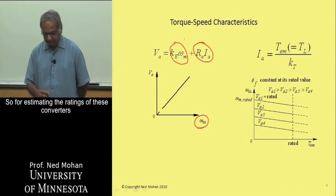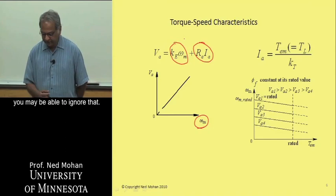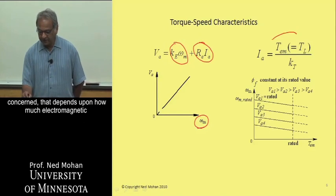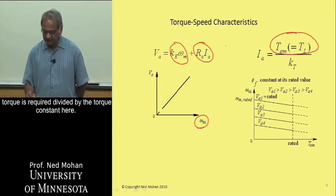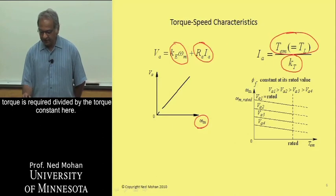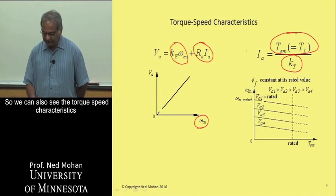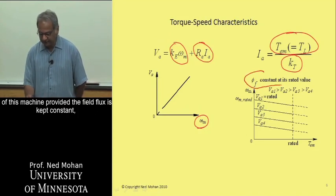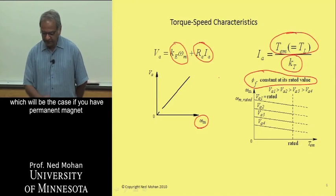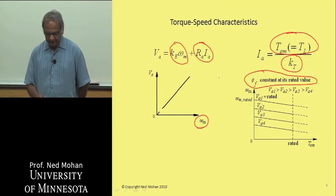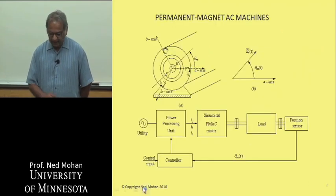So we can see here that the voltage that needs to be there across the armature terminals primarily depends upon the rotational speed. So if you know what the maximum speed is, then we can determine what this term would be, knowing the voltage constant. And then we have to take into account small drop as well across the resistance in steady state, but this is usually pretty small. So for estimating the ratings of these converters, you may be able to ignore that. As far as the current rating of this converter is concerned, that depends upon how much electromagnetic torque is required, divided by the torque constant here. So we can also see the torque speed characteristics of this machine, provided the field flux is kept constant, which will be the case if we have permanent magnet machines, and we are not doing any field weakening.